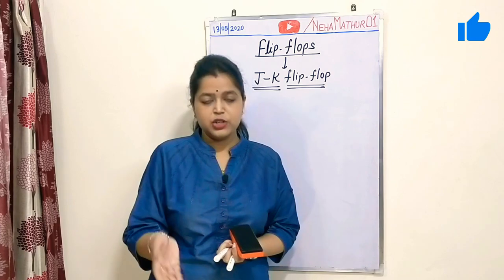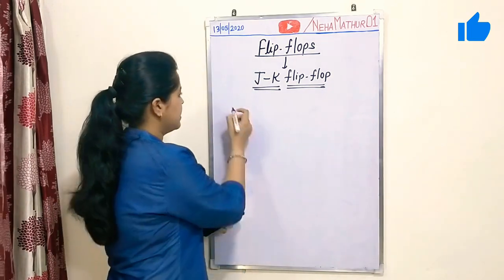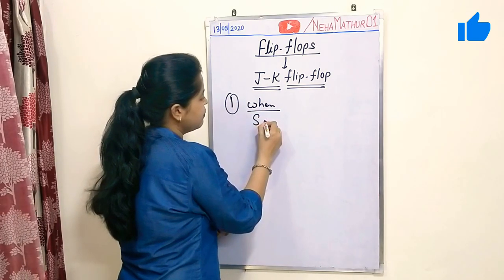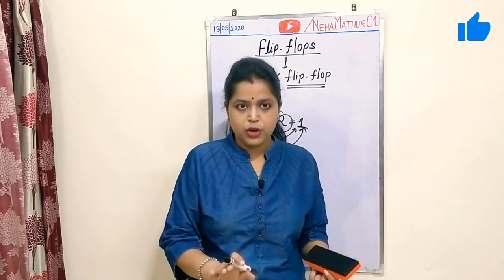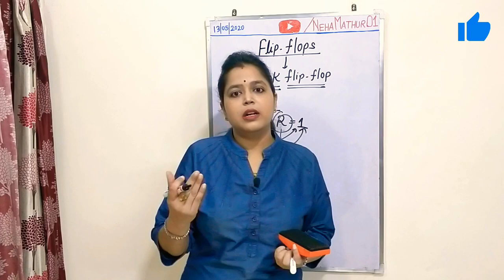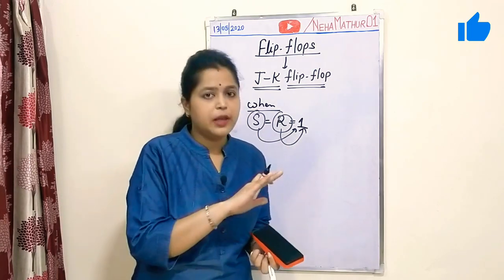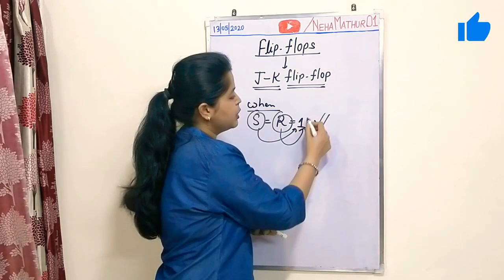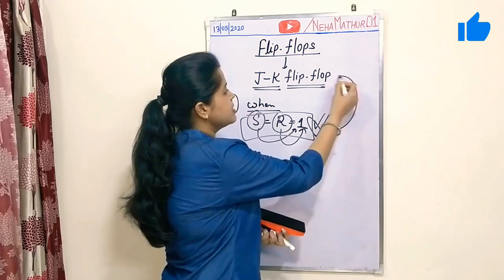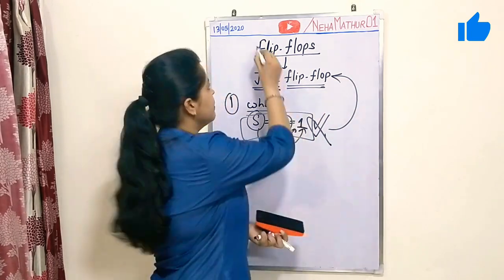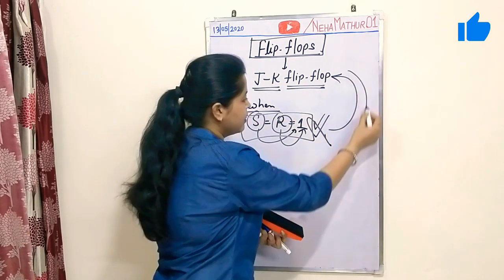JK flip-flop is basically designed so that all the issues coming from SR flip-flop can be overcome. The main issue with SR flip-flop is that when it is operated for S=1 and R=1, the circuit shows uncertainty — we say the circuit behaves under a prohibited condition. So to overcome this uncertainty problem, JK flip-flop is introduced as the next classification of flip-flops.